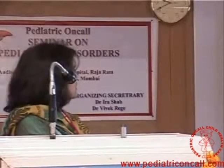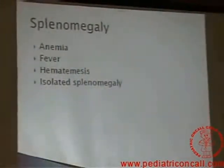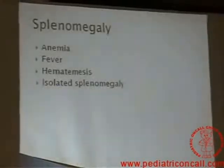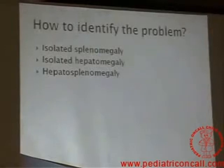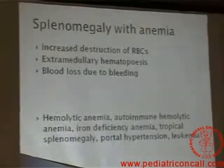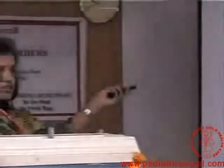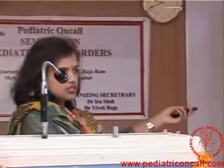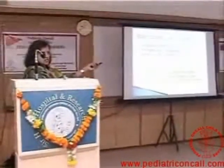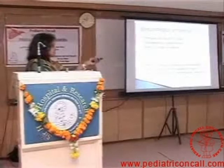If the child has any of these in combinations, you have to think what it is. Splenomegaly may come as anemia, fever with splenomegaly, splenomegaly with hematemesis, or just incidentally found isolated splenomegaly with no symptoms. When it comes as splenomegaly with anemia, that means either the spleen is breaking down the RBCs or the bone marrow is not creating RBCs. So either there is increased destruction of RBCs — think of autoimmune hemolytic anemia, hypersplenism — or extramedullary hematopoiesis has started. Causes include hemolytic anemia, autoimmune hemolytic anemia, or iron deficiency.